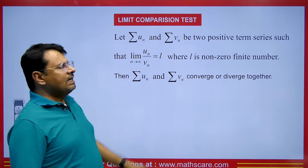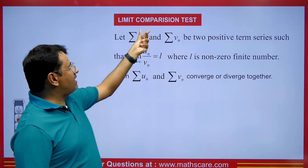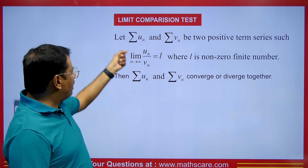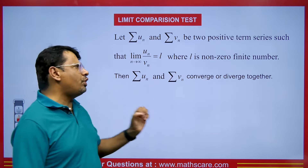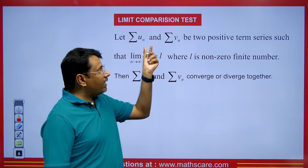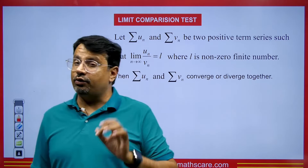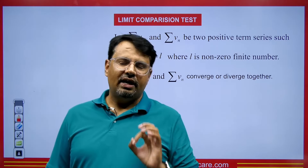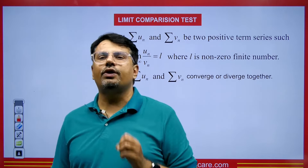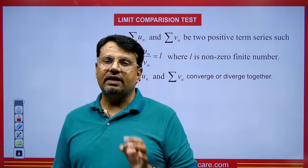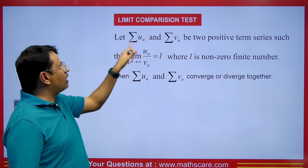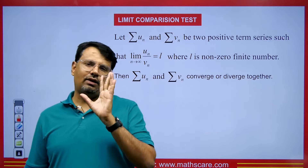Suppose you have two series: summation un and summation vn. Both are infinite series with positive terms. And the value of limit n tends to infinity of un upon vn is L, and L is a non-zero finite value. Make sure it should be non-zero finite, meaning its value should be neither zero nor infinite. So we must have a non-zero finite value.